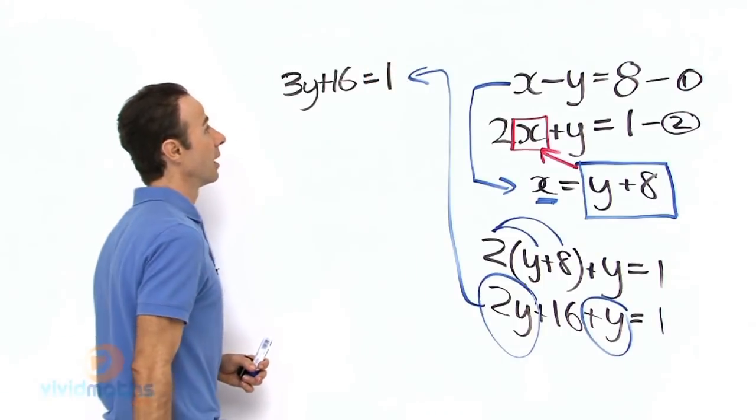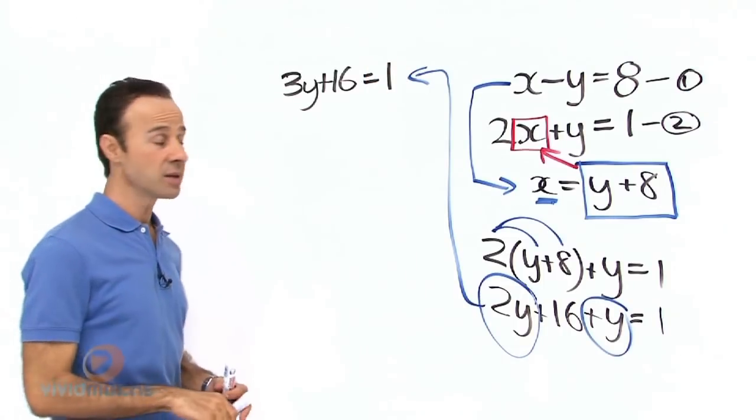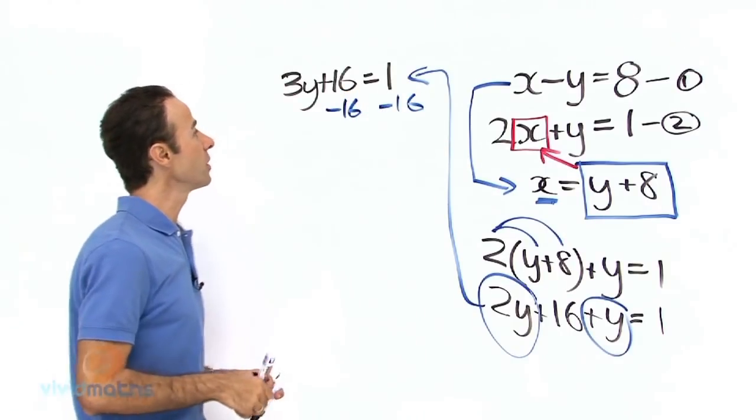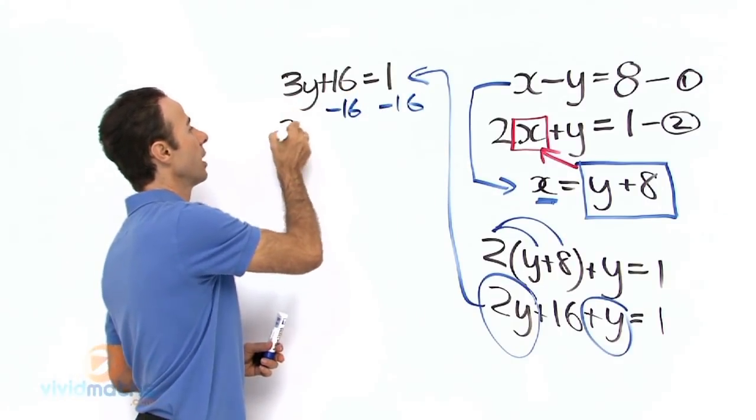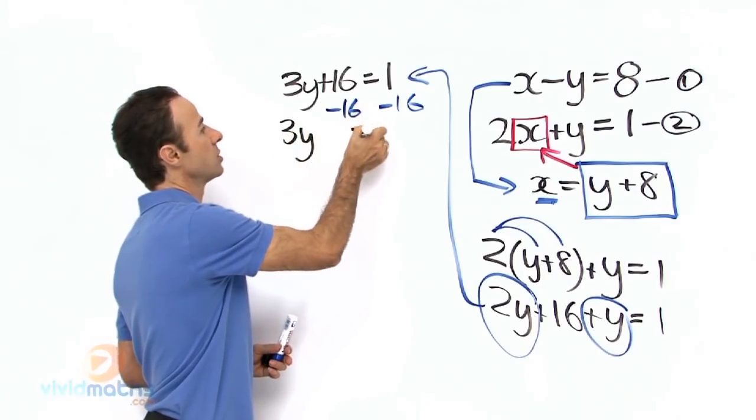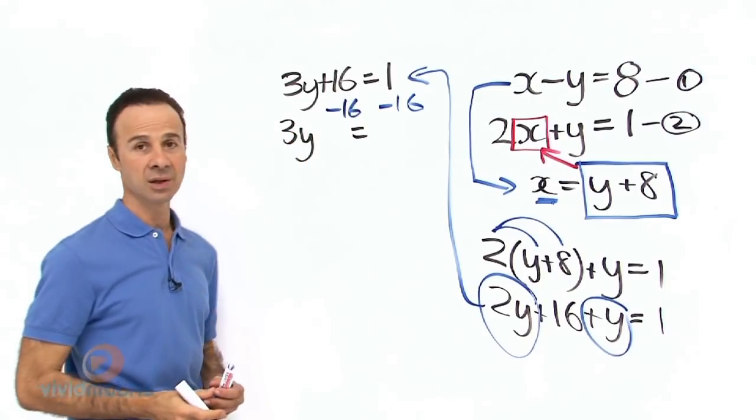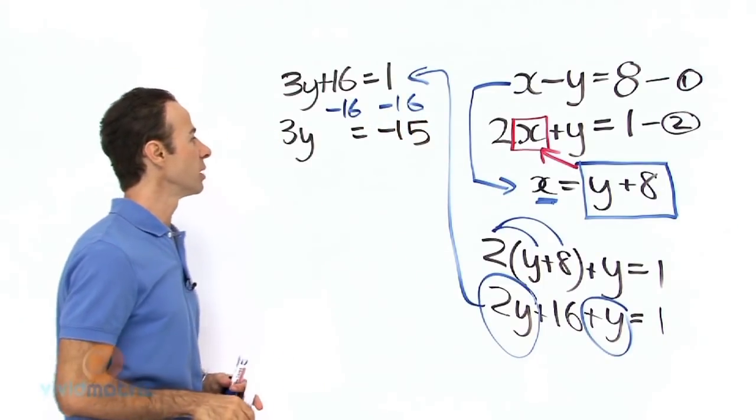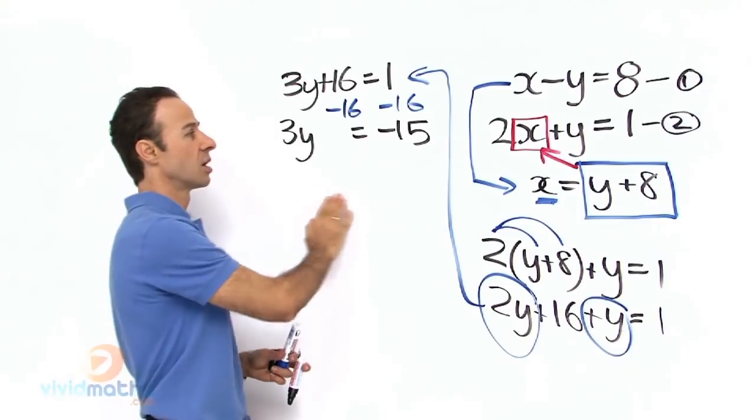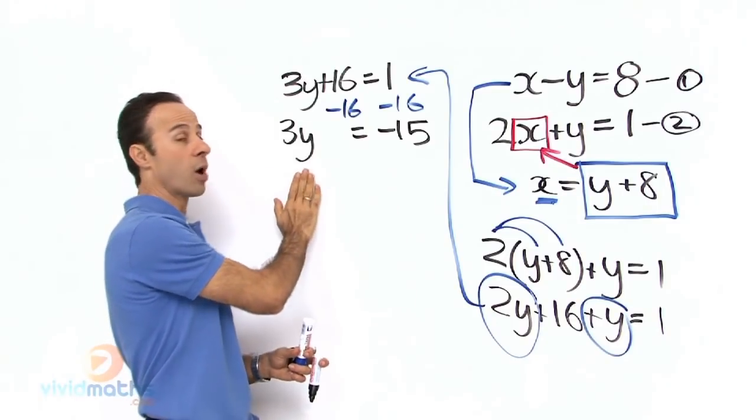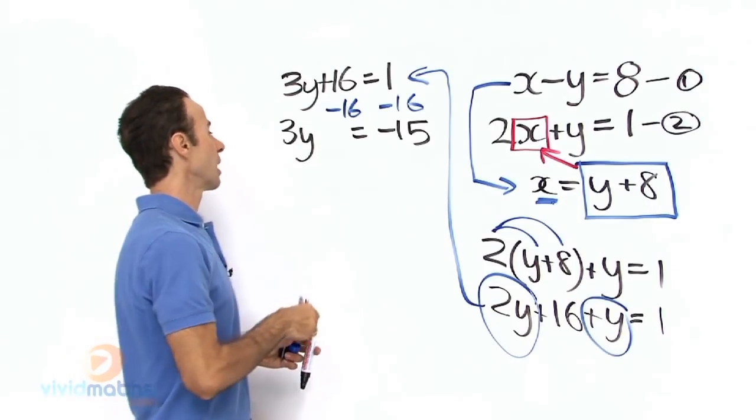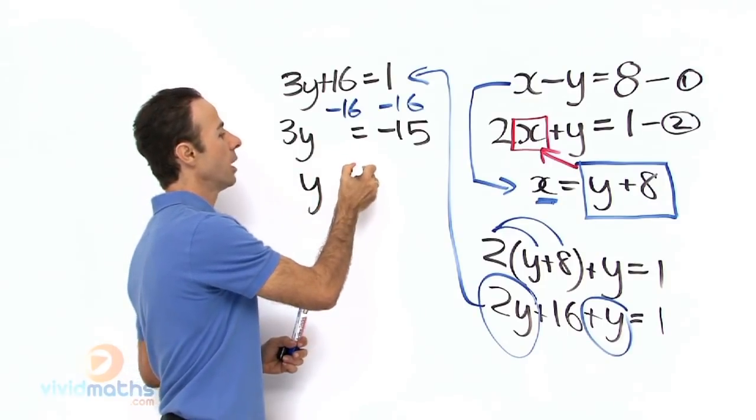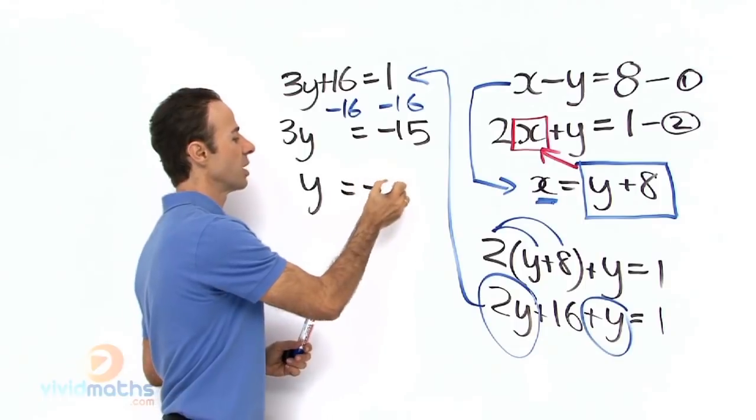Let us take away 16 from both sides. Then we have 3y equals 1 minus 16 is minus 15. And then all we need to do is divide both sides by 3, so we can make y by itself. That means we are left with y equals minus 15 divided by 3 is minus 5.